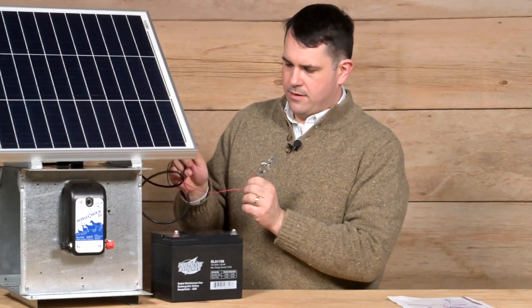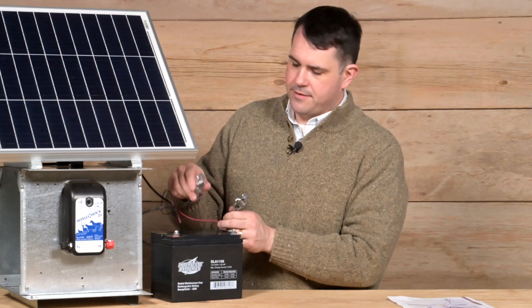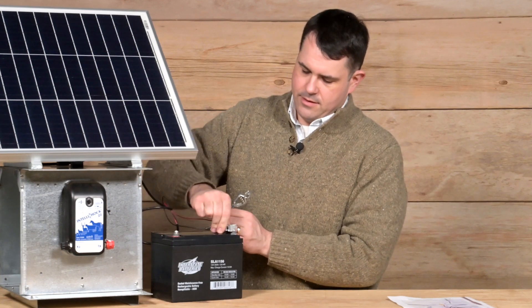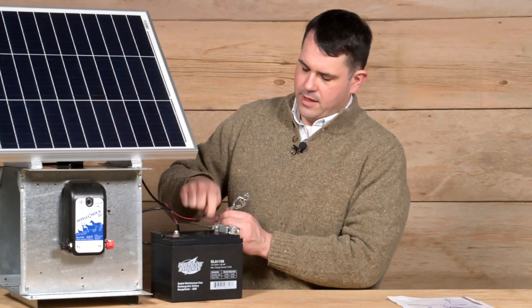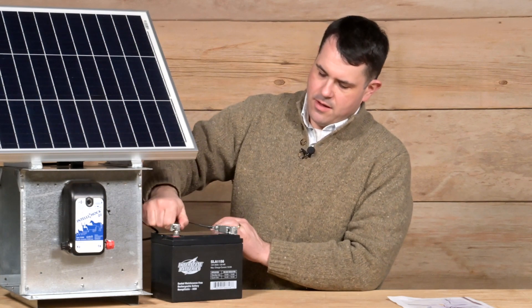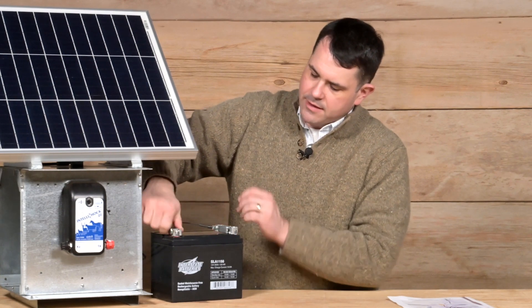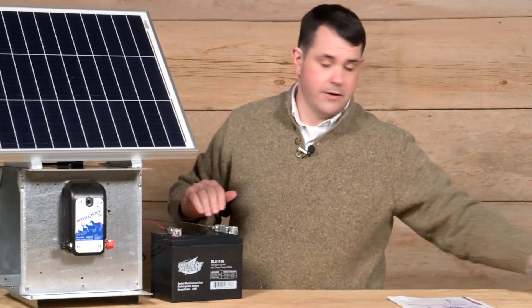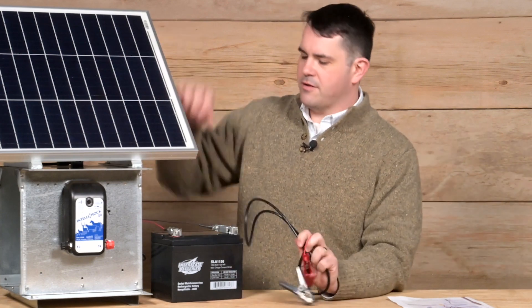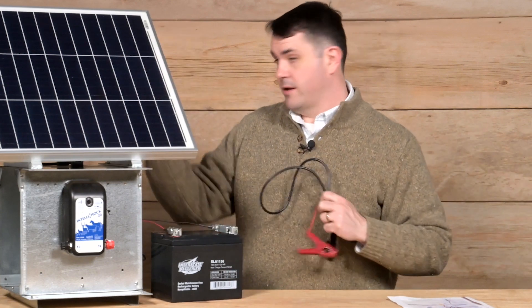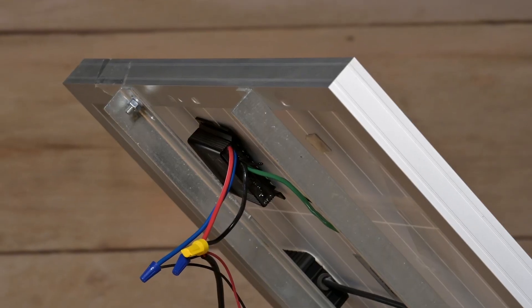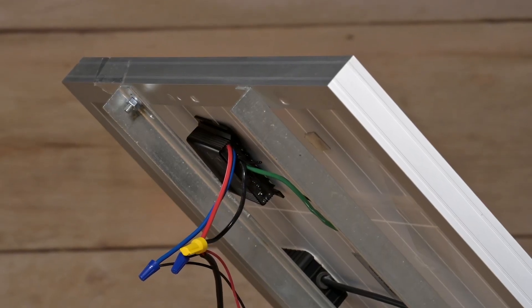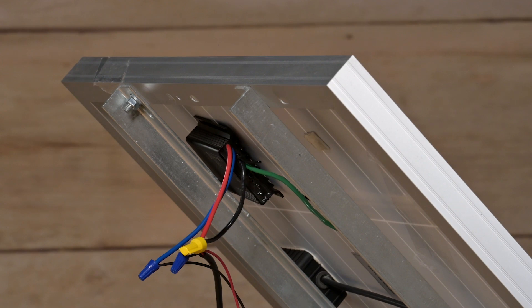And we will take our battery charge leads and negative to negative, positive to positive. So right now, in theory, any light hitting this panel will be charging this battery, and you can double check that on the regulator as there are three little LED diodes to indicate power.